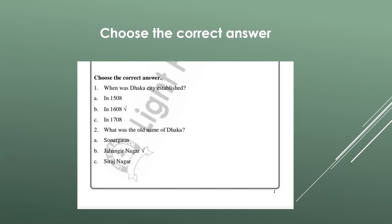Number two: what is the old name of Dhaka? You have to know that the old name of Dhaka is Jhani Nago. So option B is correct. Put your tick there. The old name of Dhaka is Jhani Nago.